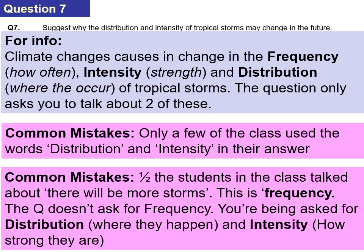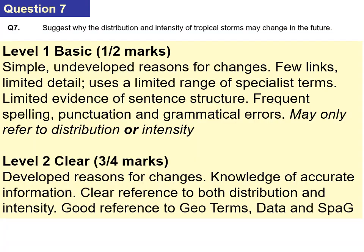The next question asks you to suggest why the distribution and intensity of tropical storms may change in the future. Climate change affects storms in three ways: frequency, intensity, and distribution. However, the question only asks about two of these. A common mistake was that many students discussed frequency — we don't want frequency, we want distribution and intensity only. The mark scheme has level one and level two: level one is basic, level two is clear.